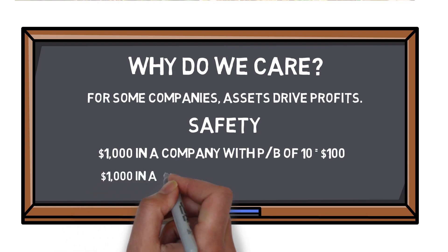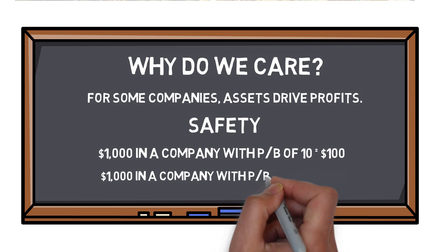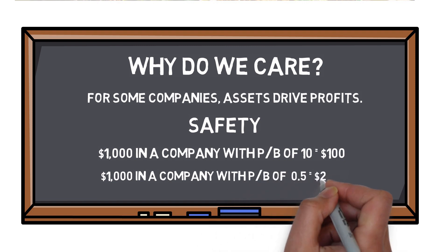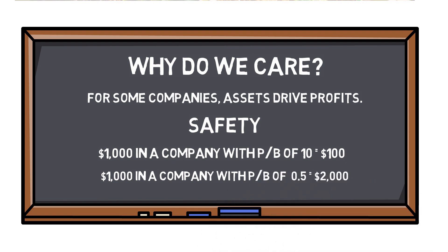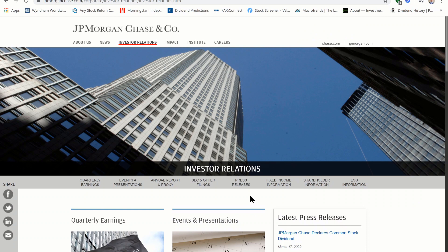If you had invested that $1,000 in a company with a price to book of 0.5 and it closed and sold, you might actually receive double your investment, or $2,000. Thus, a lower price to book ratio gives investors a greater sense of safety — you are getting more value from a company with a price to book of 1 than a price to book of 20, like Ben's Cafe. Finance is one of the industries where profits are more heavily driven by assets, and people often consider price to book when looking at whether to invest in a bank.